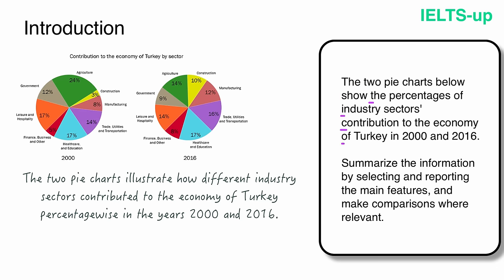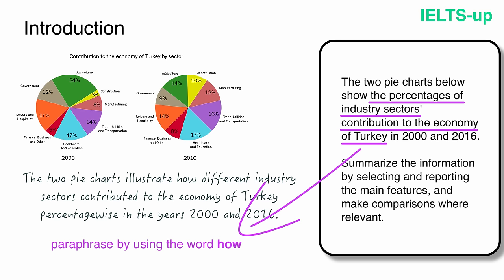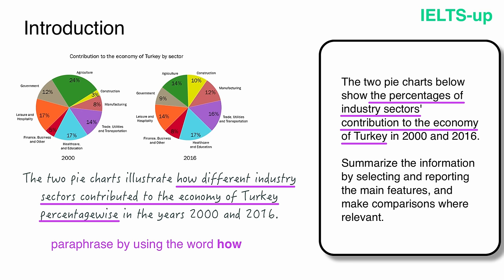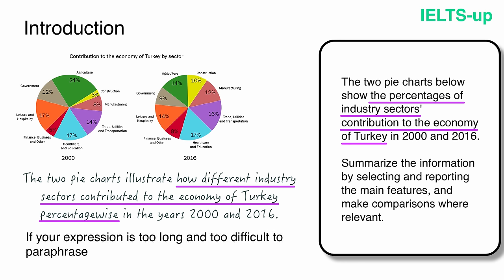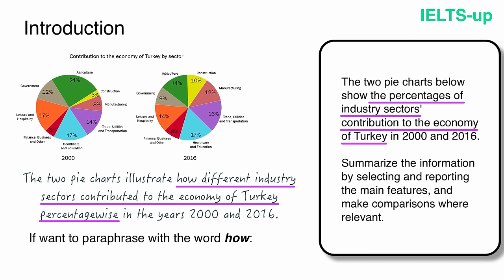Then comes the long phrase 'the percentages of industry sectors' contribution to the economy of Turkey.' I paraphrased it by using the word 'how,' resulting in: 'how different industry sectors contributed to the economy of Turkey percentage-wise.' The word 'percentage-wise' means 'in terms of percentages.' If your expression is too long and difficult to paraphrase, you can use the word 'how' — find the action noun (in our case, 'contribution'), change it to a verb ('contributed'), and make a new sentence.